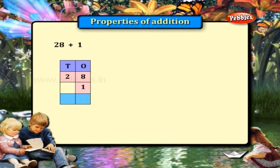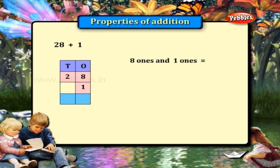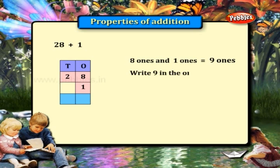28 plus 1. Here 8 and 1 are in the ones place. 8 plus 1 is equal to 9. So 9 is written in the ones place, and we get 28 plus 1 is equal to 29 as the answer.